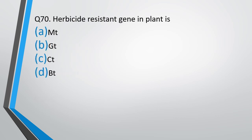Question number 70. Herbicide resistant gene in plant is MT, GT, CT or BT. The correct answer is option D. BT.